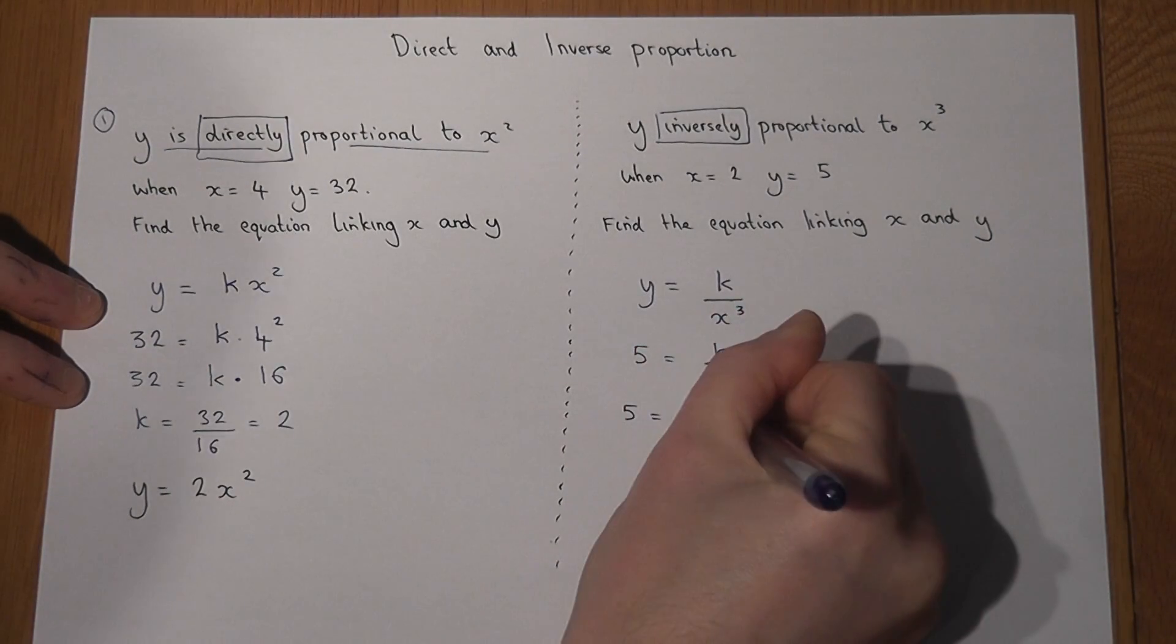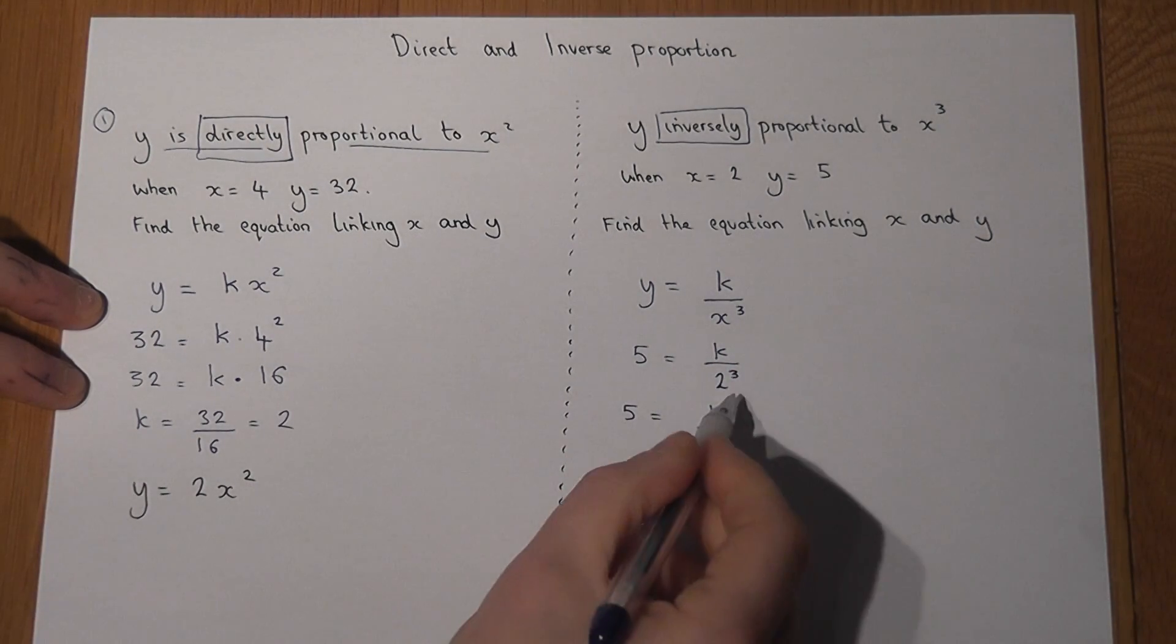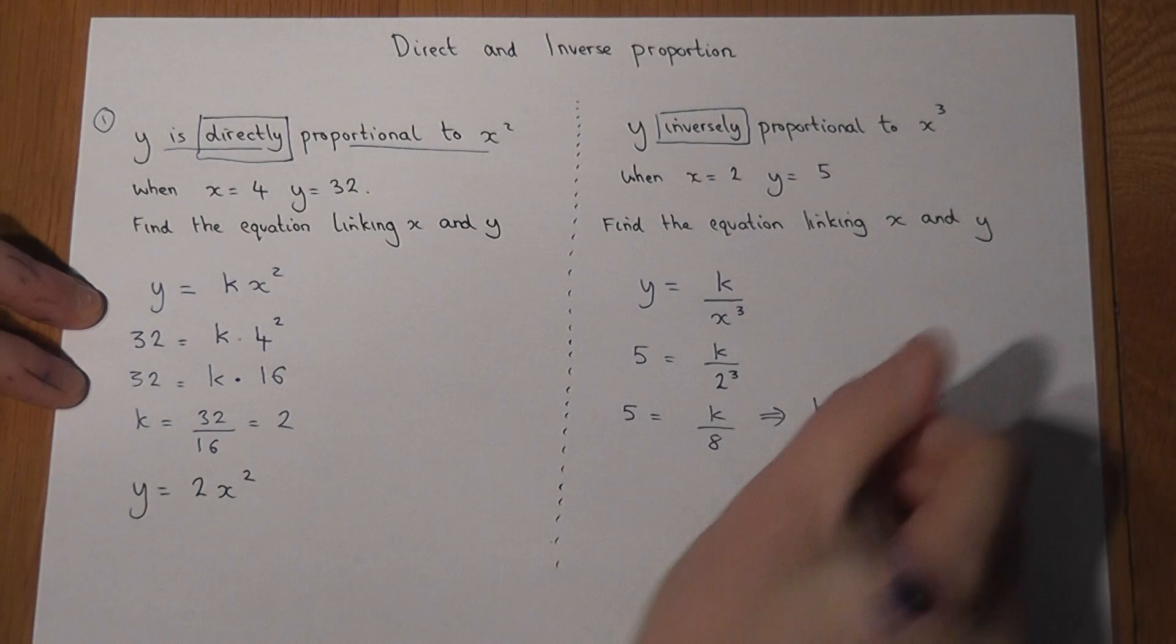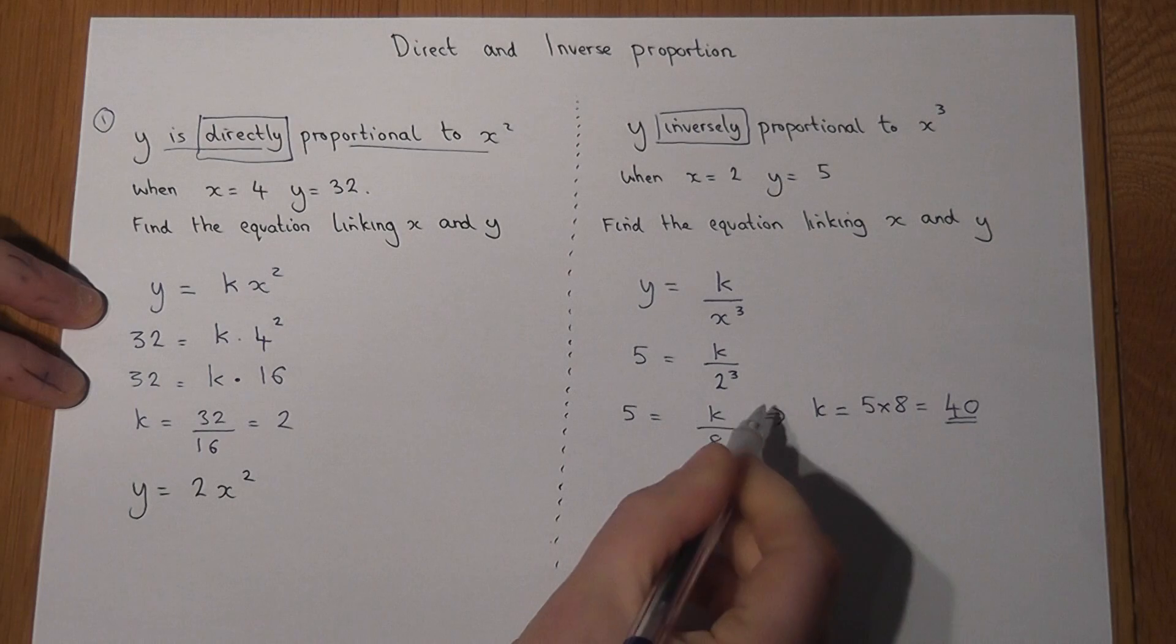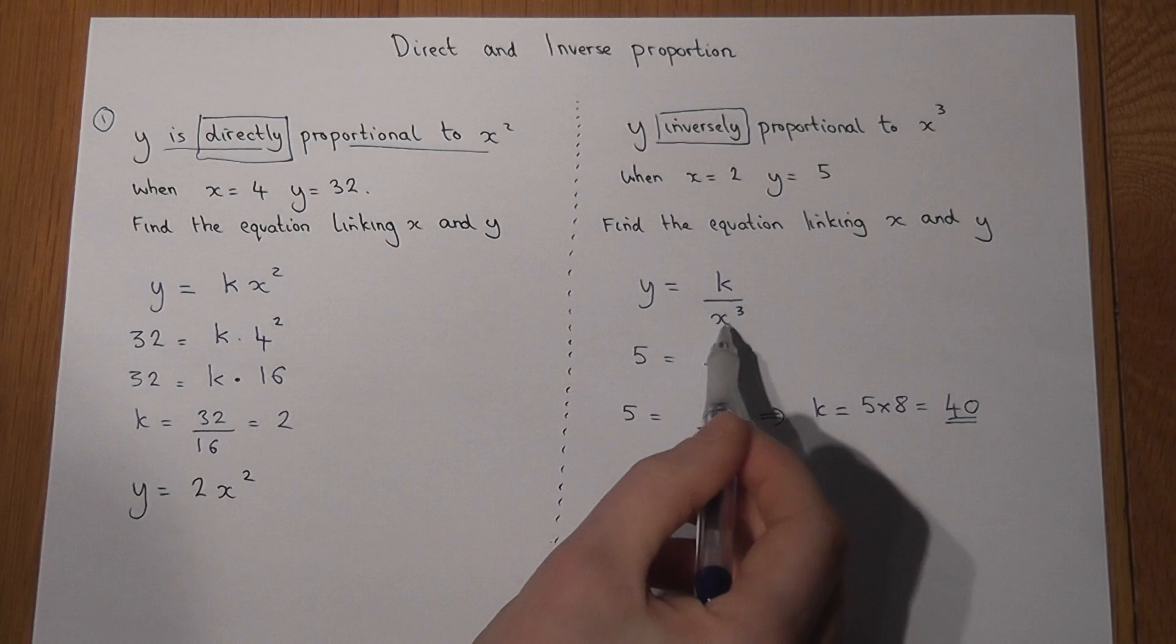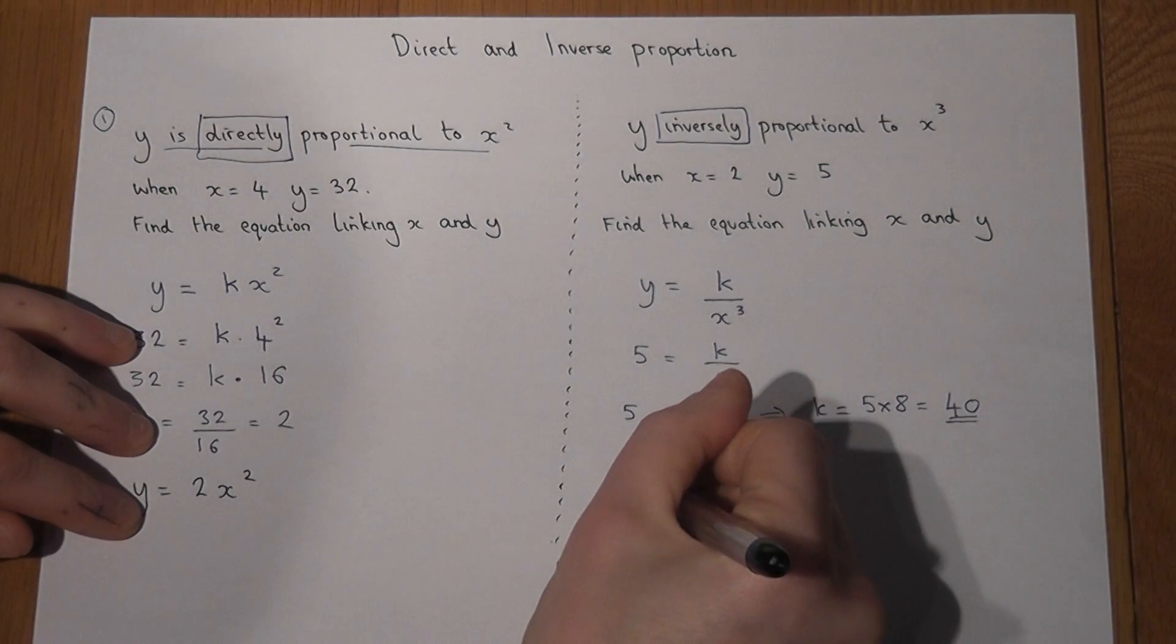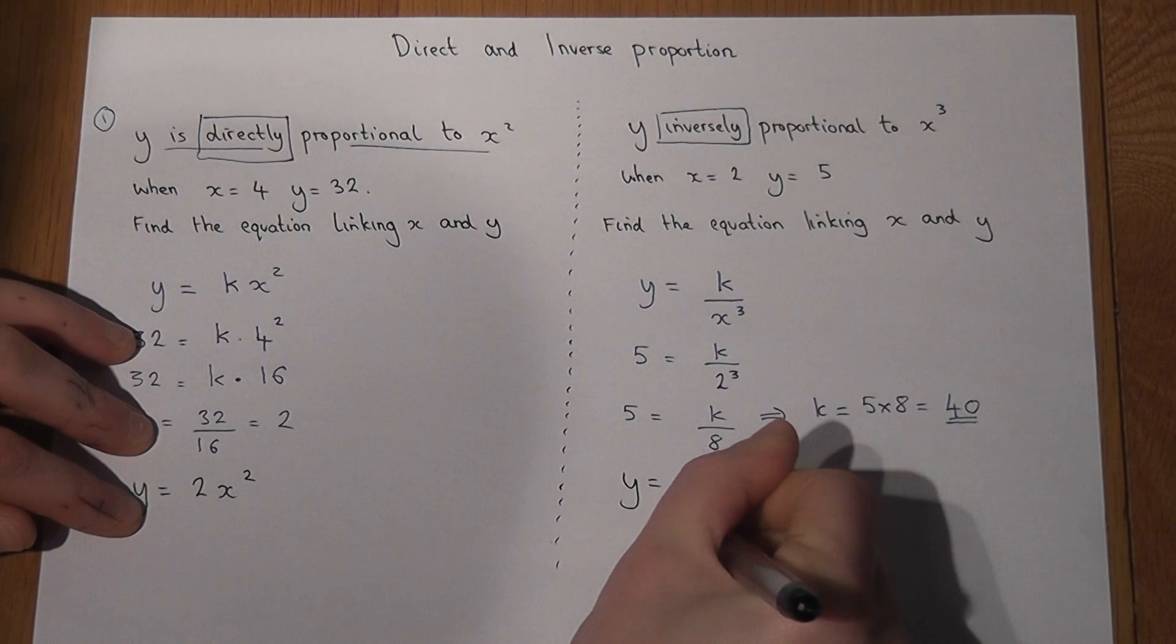I can work out 2 cubed, which is 8, so 5 equals k over 8. So to find k, k in this case I do 5 lots of 8, which just equals 40, because 40 divided by 8 equals 5. So our number linking y and x cubed in this case is 40. So the equation which I write down at the end is y equals, I now know, k over x cubed.